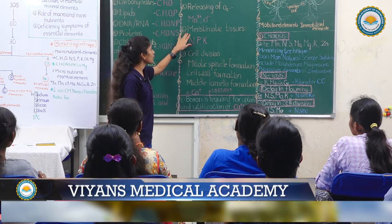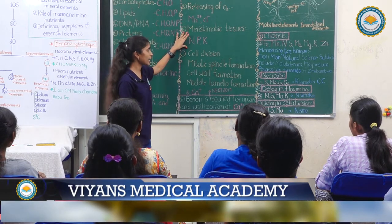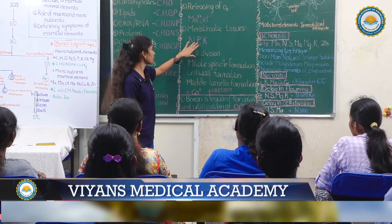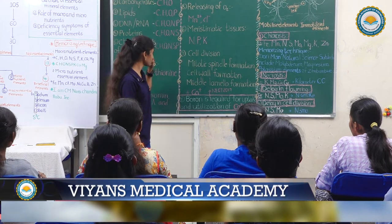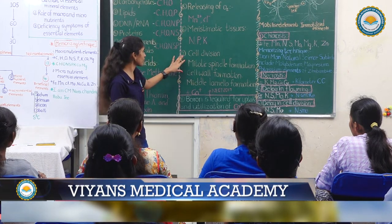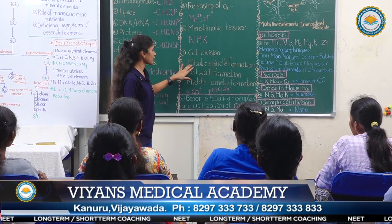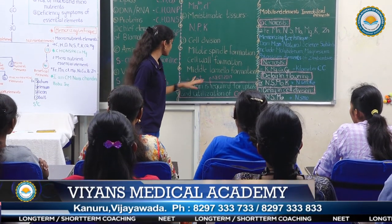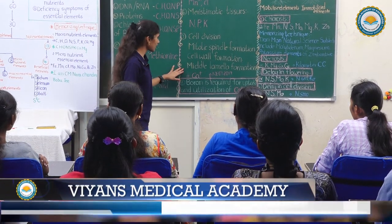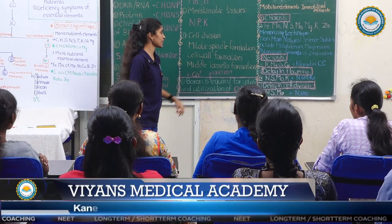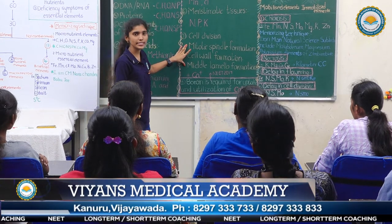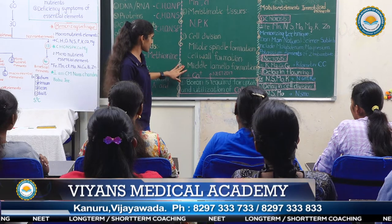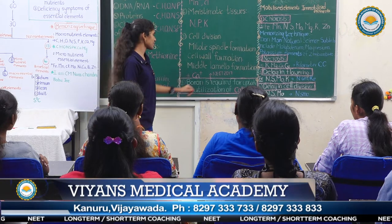Sixth, vascular tissues: the elements involved are nitrogen, phosphorus, and potassium. Seventh, cell division, mitotic spindle formation, cell wall formation, and middle lamella formation: only one element is involved in all these formations — calcium.